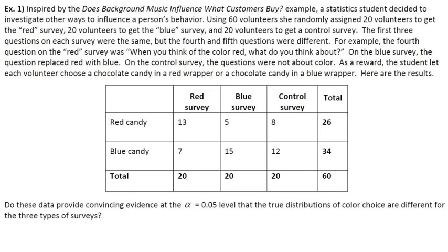So we can organize the results in a two-way table. It looks like 20 total people were assigned to the red survey, 20 assigned to the blue, 20 assigned to the control, and then after the survey, like the people that did the red survey, 13 chose a red candy, 7 chose a blue candy. For the blue survey, only 5 chose a red candy, 15 chose a blue candy, and the control, it was 8 and 12 for red to blue.